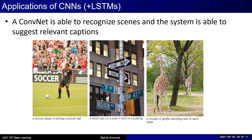Another very useful and popular problem is called captioning, where you show the model a single image and the model has to generate a description of the scene. For example, a possible caption for a soccer image could be 'a soccer player is kicking a ball.' This looks like a very challenging problem, but with CNN — along with something else we'll see later — today we can solve this problem provided we have sufficient training data.